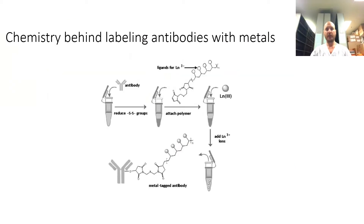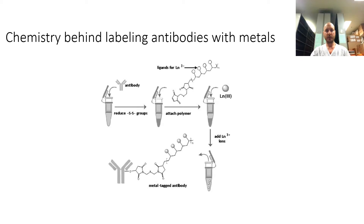The chemistry behind labeling antibodies with metals starts with mild reduction of the antibody. This converts the sulfides in the Fc fragments to thiols. Then the unlabeled polymeric tag is conjugated to the antibody through a bismaleimide linker, and this polymeric tag contains ligands for metals. Metals are then added to the solution which binds to the metal tag, and the antibody is subsequently conjugated with metals and ready to be used for Hyperion.